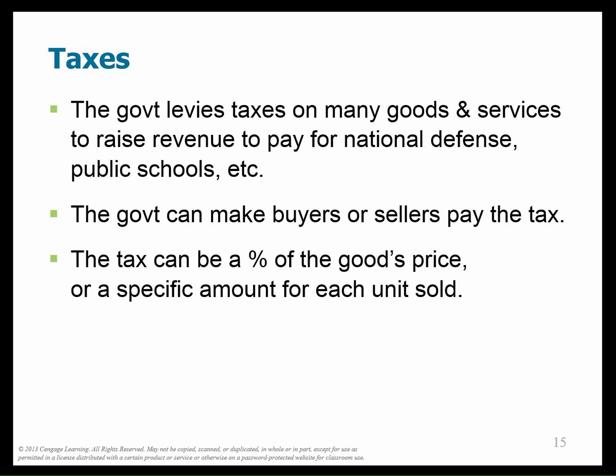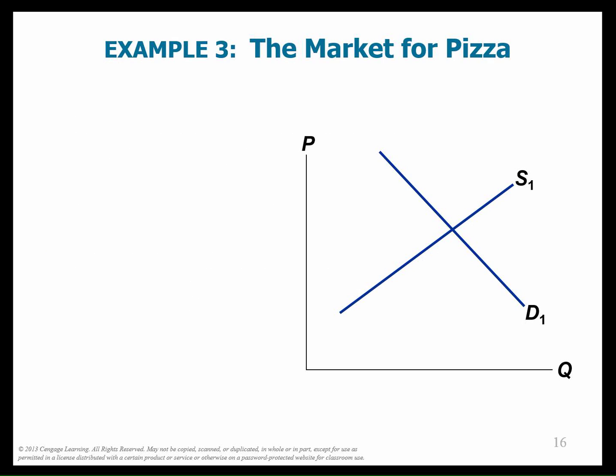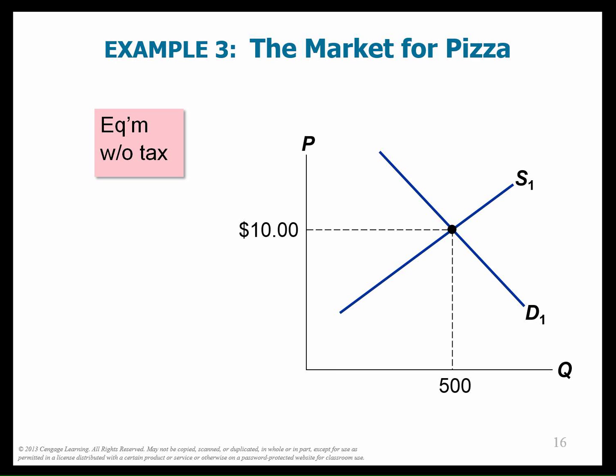The government levies taxes and uses them to pay for public goods. We're only going to analyze per unit taxes, which is a tax per unit. Here is the market for pizza, with price and quantity curves labeled correctly, supply and demand curves, and an equilibrium made up of a P and a Q.